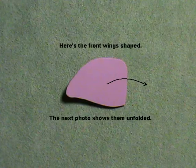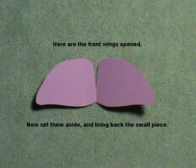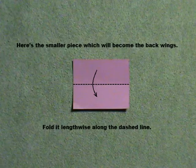Here are the front wings opened. Now set them aside and bring back the small piece. Here's the smaller piece which will become the back wings.